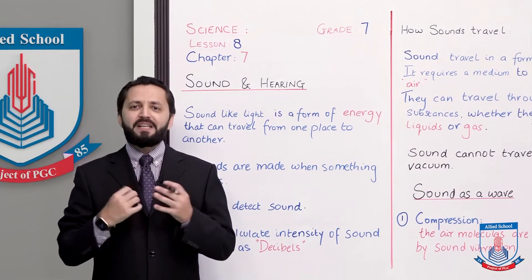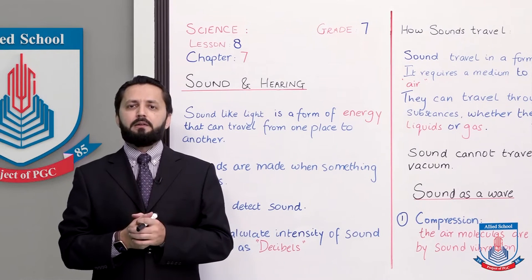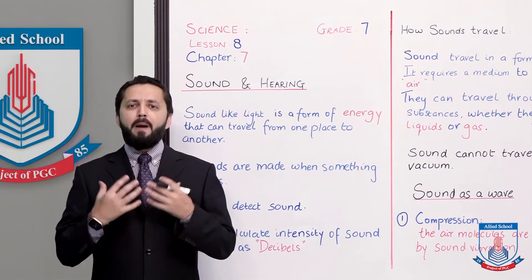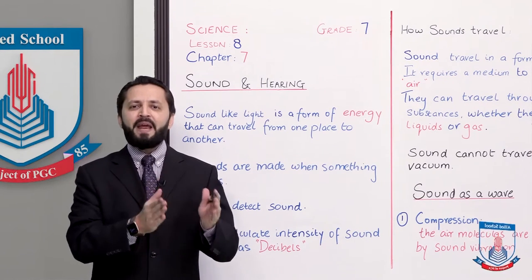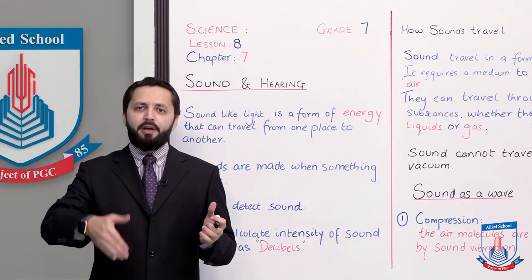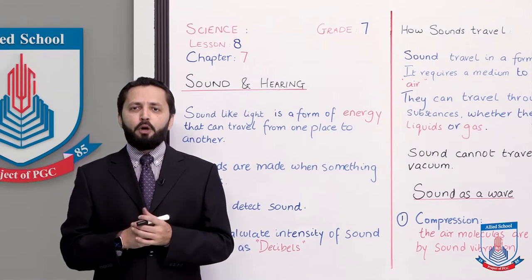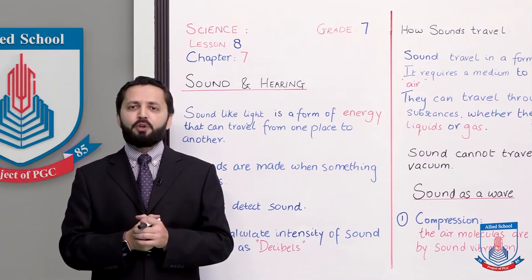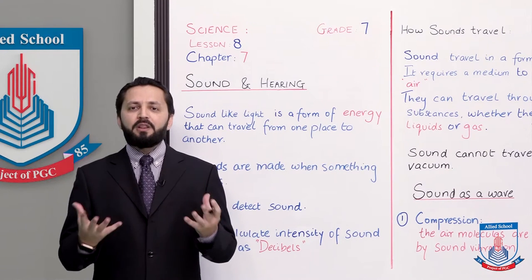How is sound produced? When something vibrates. Sound is made when something vibrates. For example, on a guitar, when you vibrate the strings, different sounds are produced. When you beat a drum, again sound is produced — but how? How does this happen?